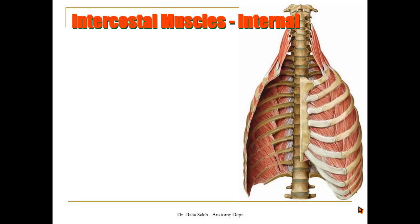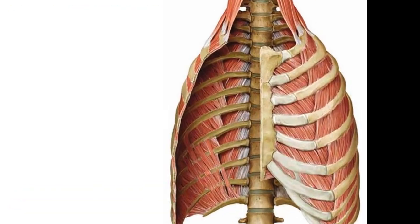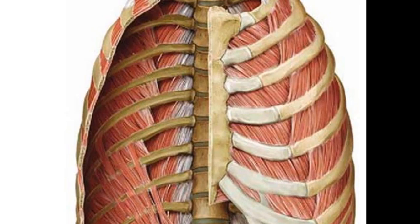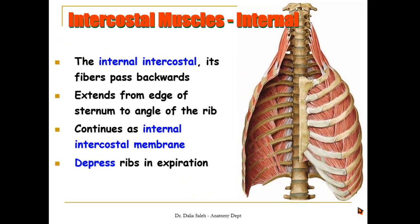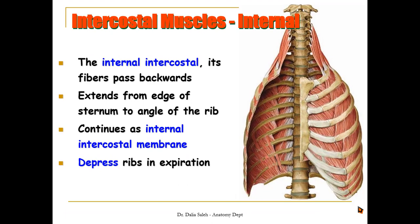The second layer is the internal intercostal muscles and their fibers are the opposite of that of the external intercostal muscle. They extend from the edge of the sternum anteriorly to the angle of the rib posteriorly. At the level of the angle of the ribs they are replaced by the internal intercostal membrane. The action of these muscles is to depress the ribs during expiration.